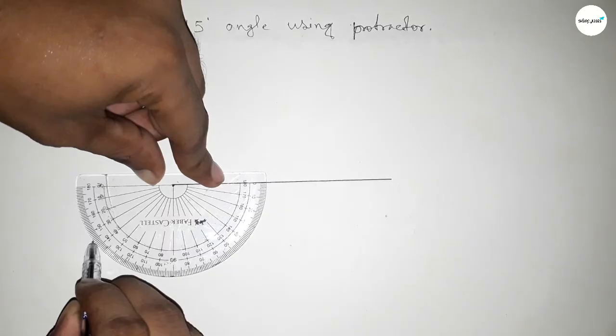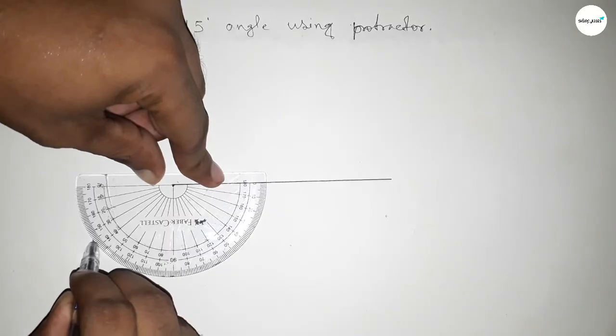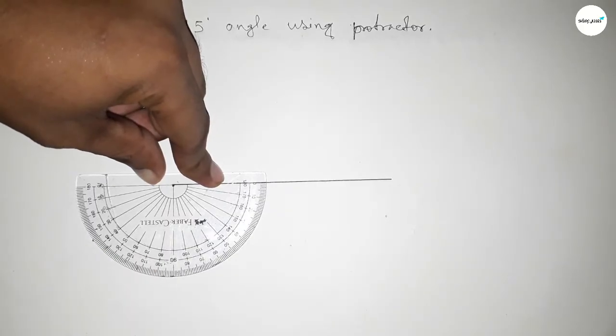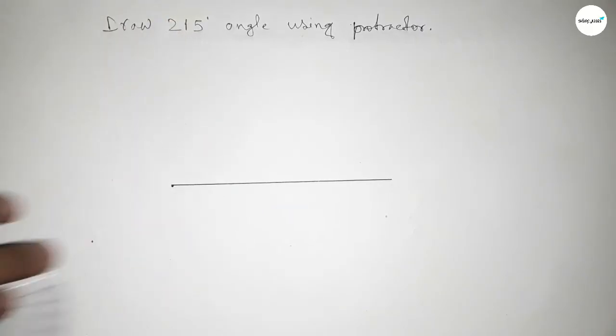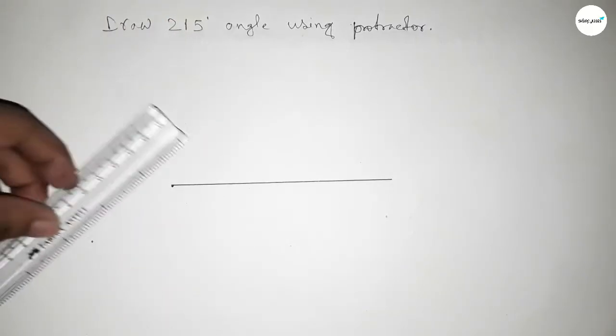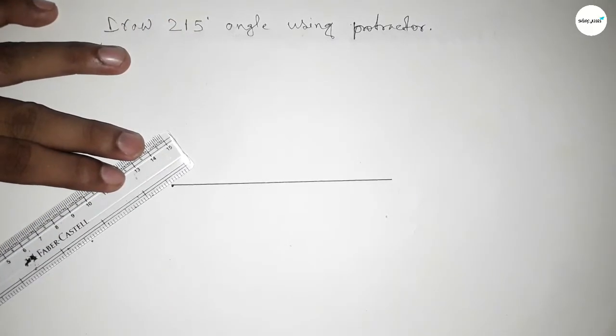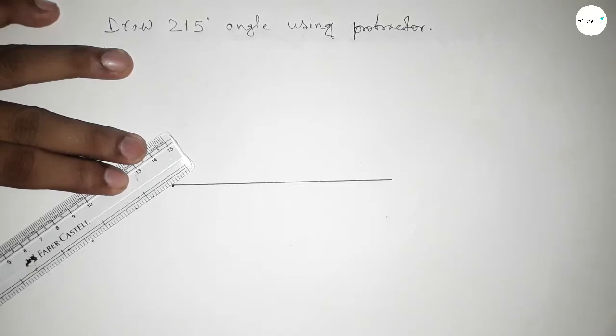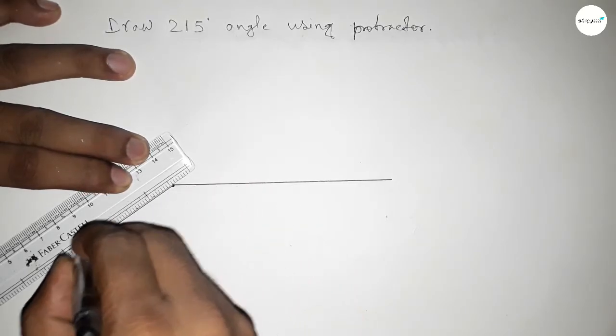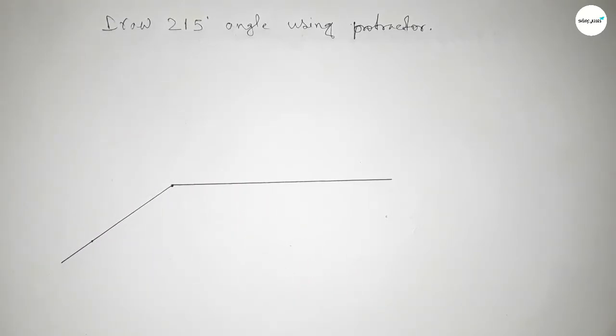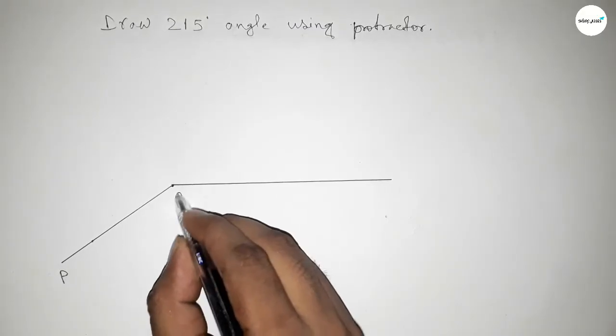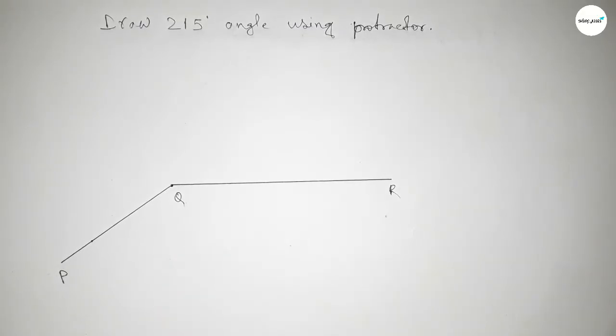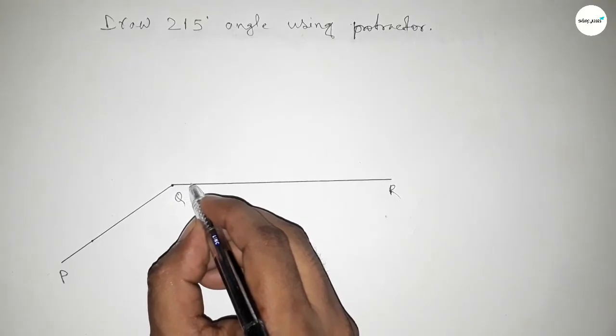By adding 35 degree angle with 180, we can get 215 degree angle. By joining this to get 215 degree angle. We got 215 degree angle and this is PQR.